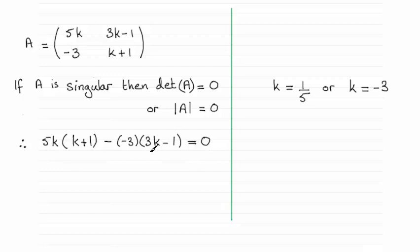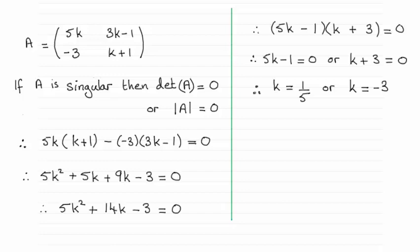Just solve this equation now and you should find you get the values of k. When you expand it and rearrange it, you get a simple quadratic equation which factorises, and that leads you into your two values of k.